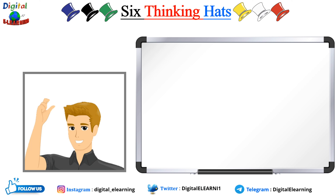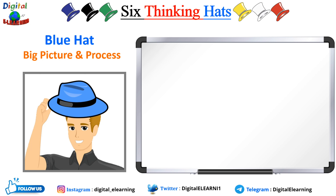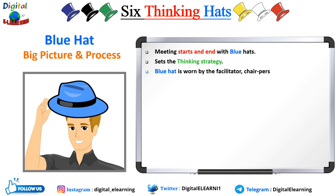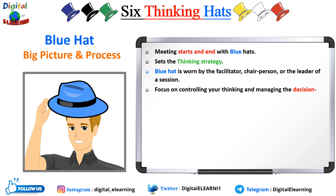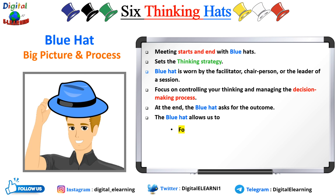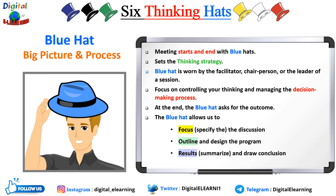Six Thinking Hats can be used in any order, but typically we start with the blue hat and end with the blue hat as well. The blue hat talks about the big picture and the process. The person wearing the blue hat starts and ends the meeting — it essentially sets the thinking strategy. This hat can be used to drive the thinking process to better routes. Typically the blue hat is worn by the facilitator, chairperson, or leader of a session. In blue hat mode, you focus on controlling your thinking and managing the decision-making process.